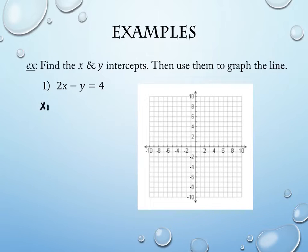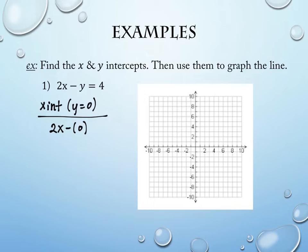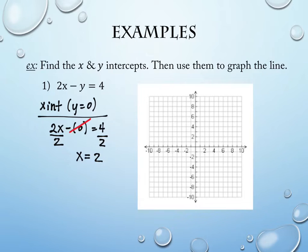Finding the x-intercept means letting y equal 0. So this is 2x minus 0 equals 4, leaving me with 2x equals 4. Dividing by 2 gives x equals 2. Just like we talked about in the last section, x-intercepts and y-intercepts are points — they're ordered pairs. So this is the point (2, 0). That's the x-intercept.